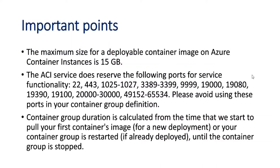A few important technical points about ACI: the maximum size of a deployable container image is 15 GB as of now. Certain port numbers are reserved by Microsoft Azure, so you should avoid using those ports for your containers. Container group duration is calculated from the time you start pulling your first container image for a new deployment, or when your container group is restarted, until the container group is stopped. Microsoft charges based on that duration — how much you use is how much you pay.